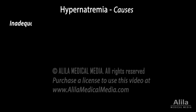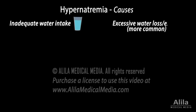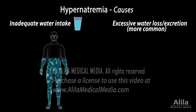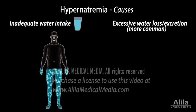Hypernatremia most often occurs because of inadequate water intake, or excessive water loss or excretion. Water intake is regulated by thirst. When a decreased body fluid volume or an increased plasma osmolality is detected, the brain perceives it as thirst and produces water-seeking behavior.